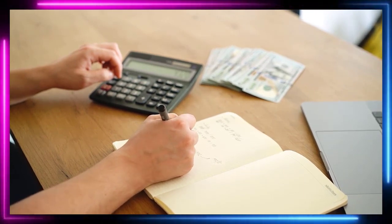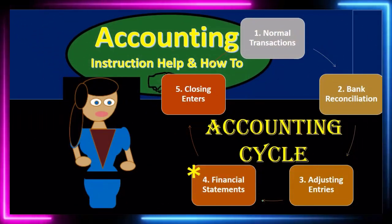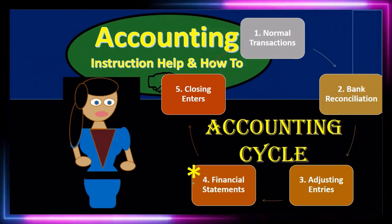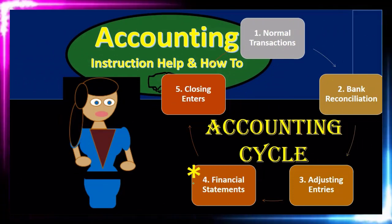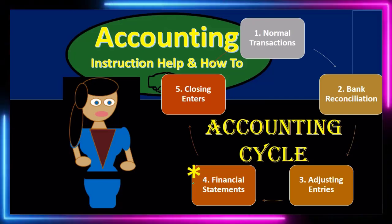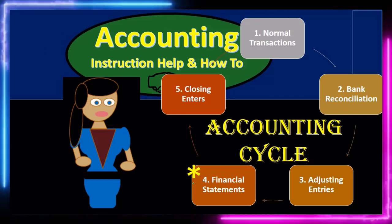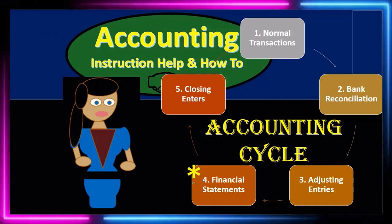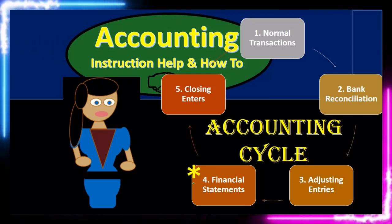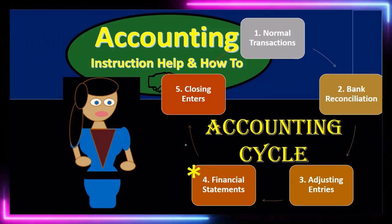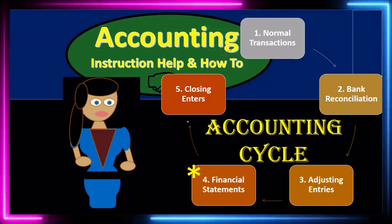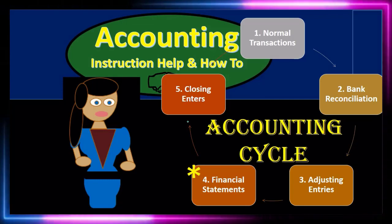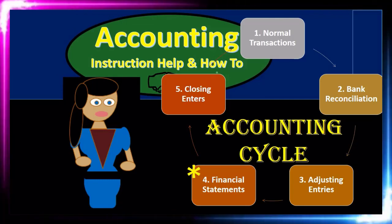Once the adjusting entries have been done, we can finally make the financial statements — this is the end goal, marked with an asterisk because it's the end product we're really looking for. This is what external users of the financial statements want. But notice it's step four of five — it's not the end, although it's the main event. We still have the cleanup process, the closing process, which gets us ready for the whole system to start again.